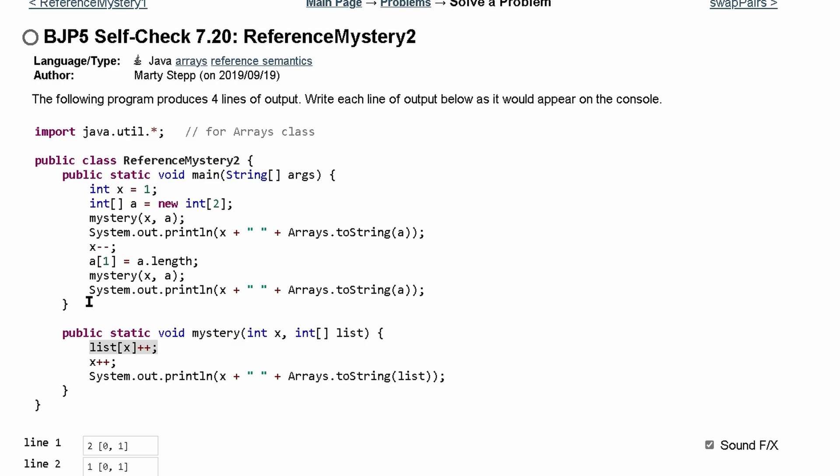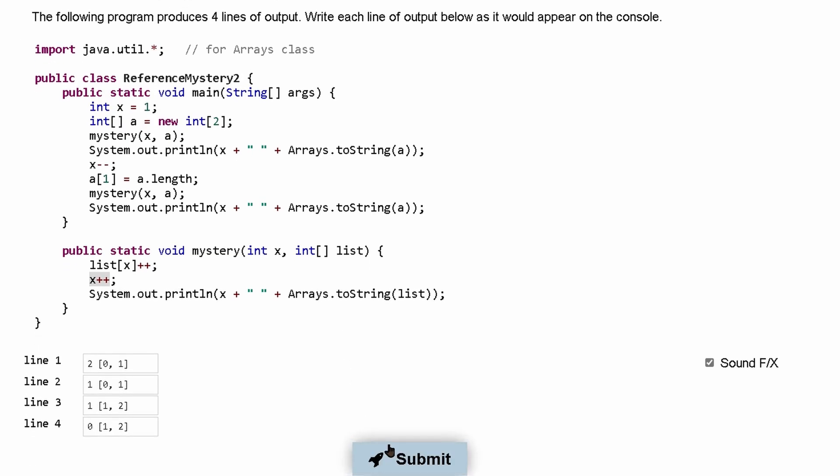And then we're going to come out of here and we go into this System.out.println. And this System.out.println is essentially the same as this, but we don't have this x++. So this should be a 0. And we can submit.